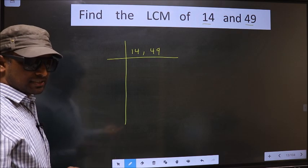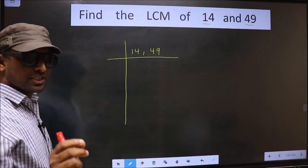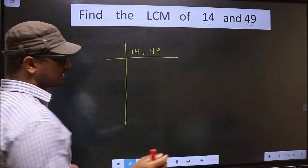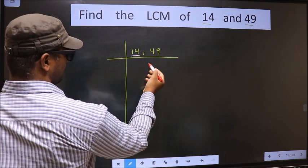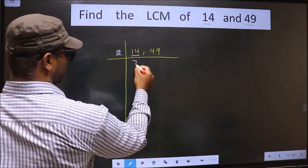Okay, next. Now we should focus on the first number. That is 14. 14 is 2 times 7.